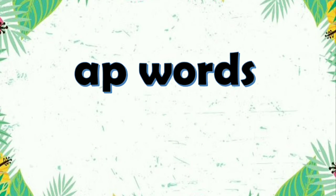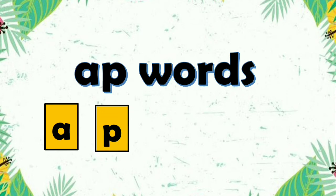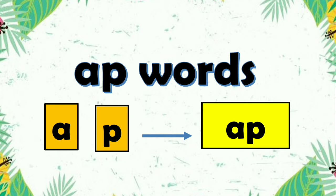App words. What is the sound of A? The sound of A is 'app.' And the sound of P is 'puh.' When we join them, it makes the sound 'app.'